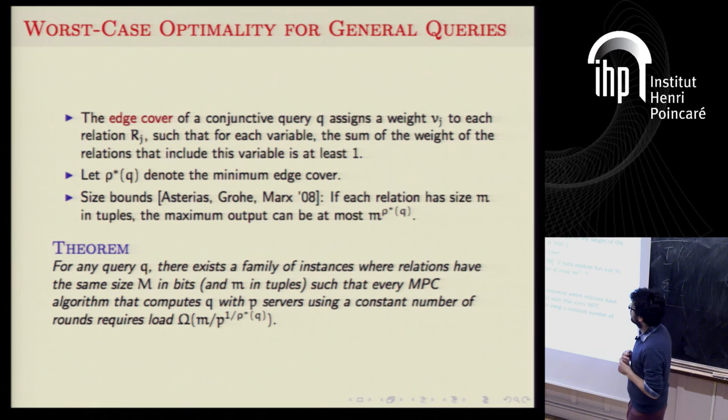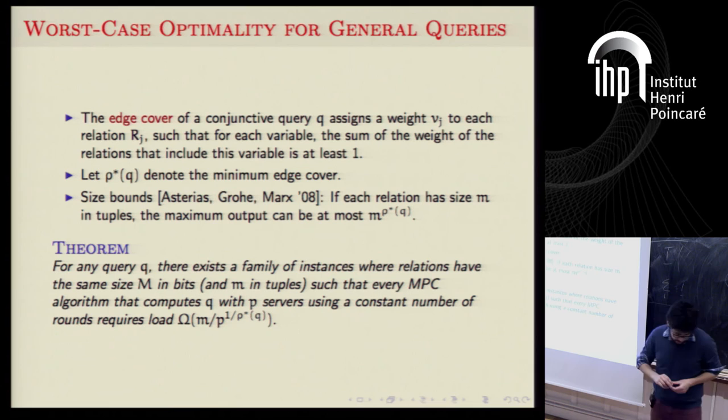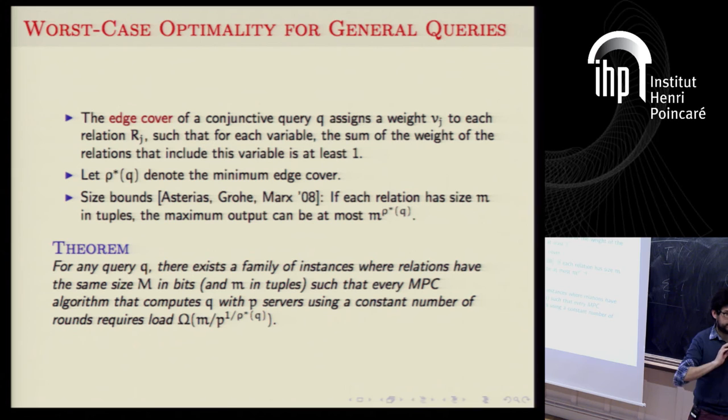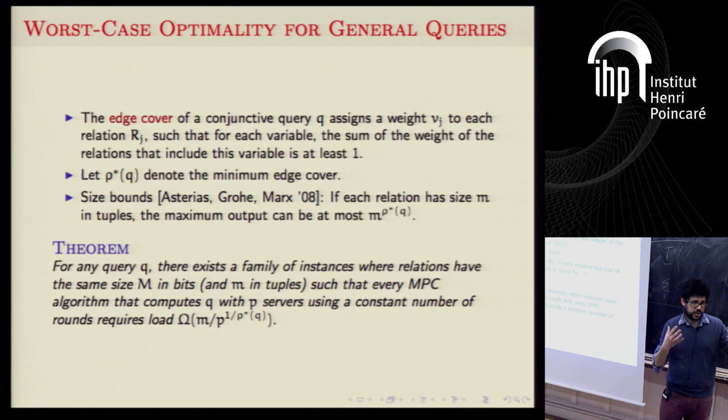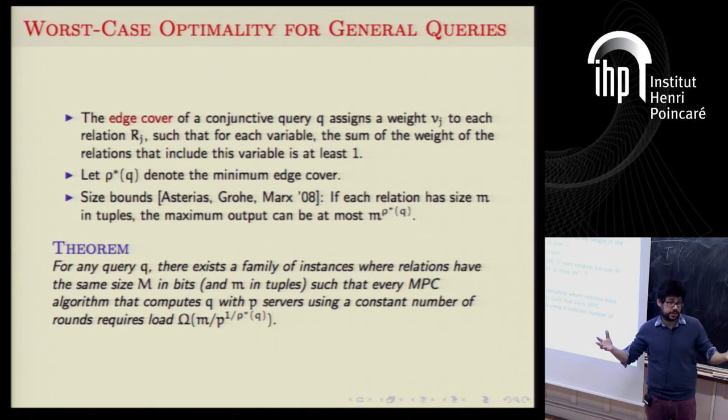When we move from one round to multiple rounds, what can we say about worst-case optimality? We want to find algorithms using multiple rounds that are worst-case optimal. We need to find the particular instances that give the worst lower bounds for multiple rounds, and design algorithms that match this bound for any possible instance.